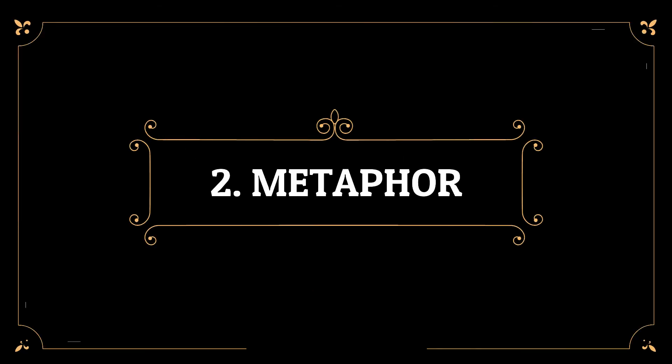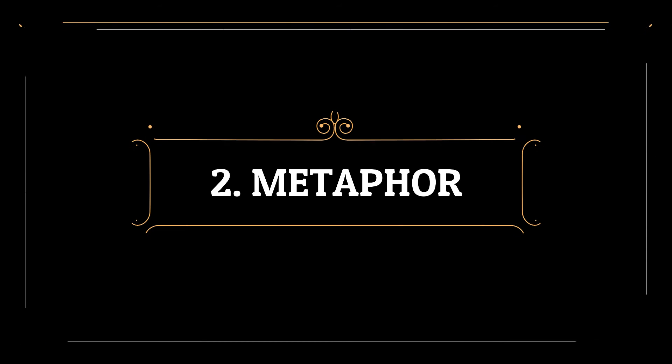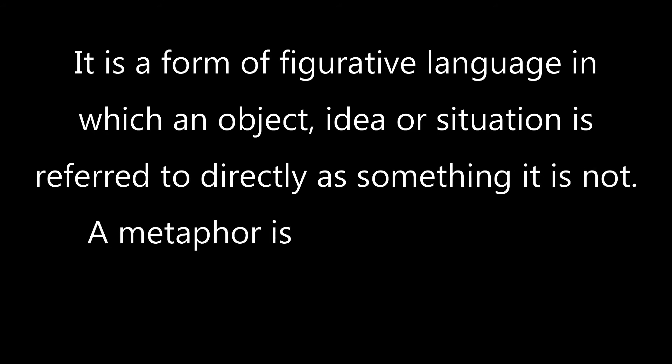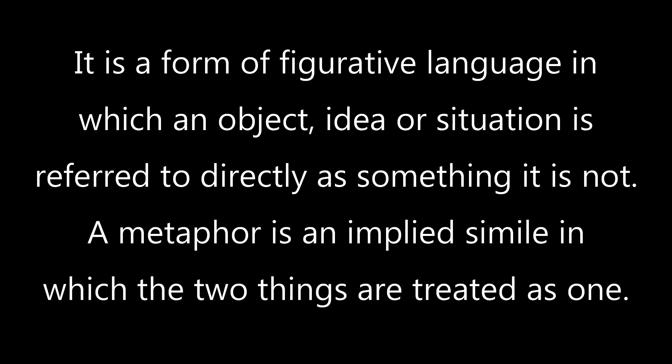The second type is metaphor. It is a form of figurative language and a rhetorical device in which an object, idea, or situation is referred to directly as something it is not. It moves away from referring to something in a literal sense and refers to it as something else in order to create a more imaginative figure of speech and description. In short, a metaphor is an implied simile in which the two things are treated as one.